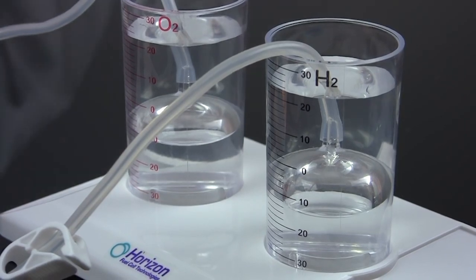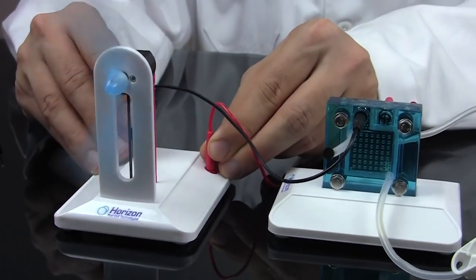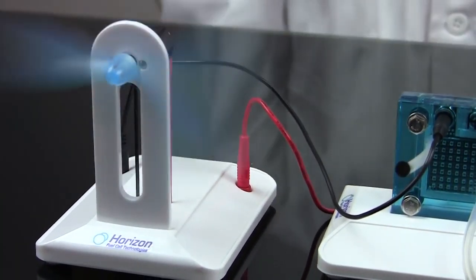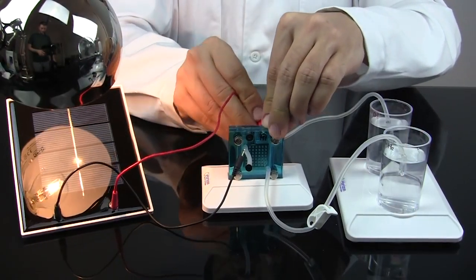When you've got enough gas, disconnect the battery and connect the fuel cells to the fan motor to generate electricity. If you don't want to use the battery pack, the reversible fuel cell can also make hydrogen using the solar panel or wind turbine.